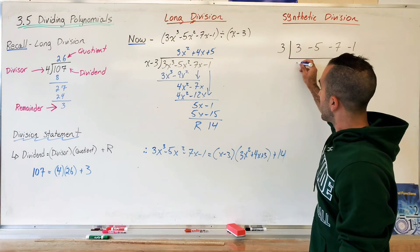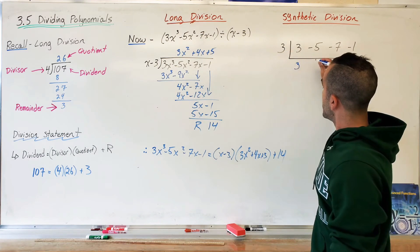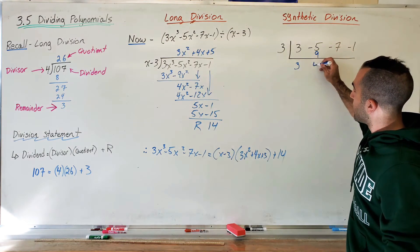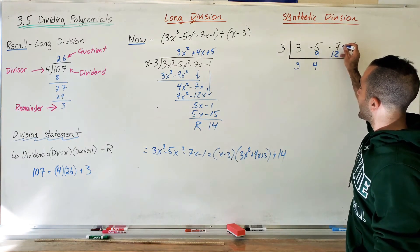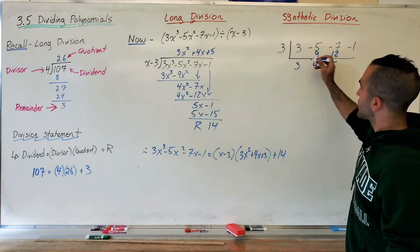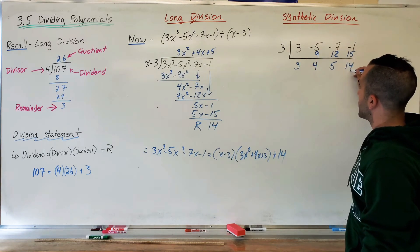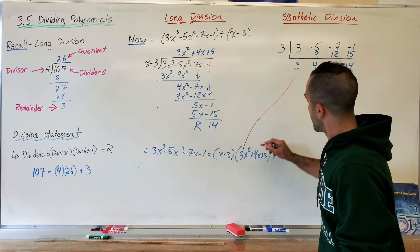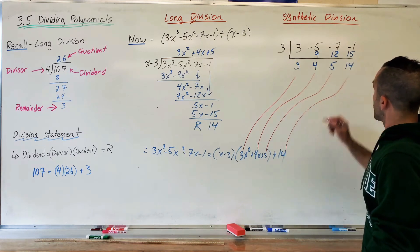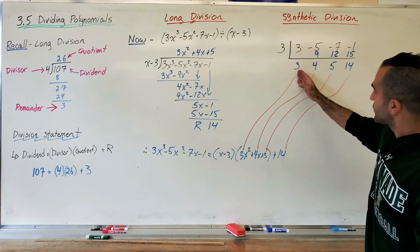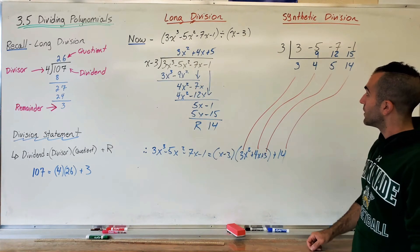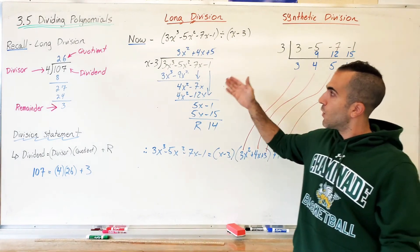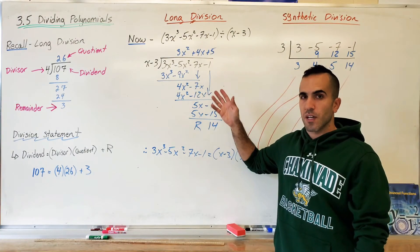These numbers at the bottom are the coefficients of your quotient followed by your remainder, in order. So the result is 3x² plus 4x plus 5, remainder 14 — the same answer as long division. I saved ink, I saved time, I saved brain power. Synthetic division is definitely the way to go. There's no reason to do long division if you don't have to — unfortunately, sometimes you have to.